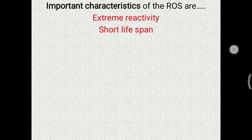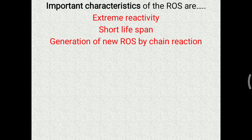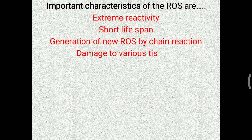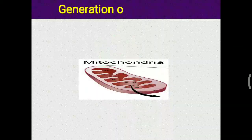Important characteristics of reactive oxygen species include: they are extremely reactive; they have a short lifespan; and they generate new reactive oxygen species through chain reactions. A free radical immediately reacts with a nearby molecule and may convert that molecule into another free radical, so the chain reaction can continue, causing damage to various tissues.